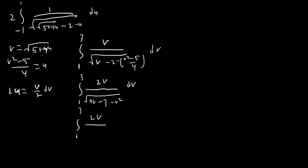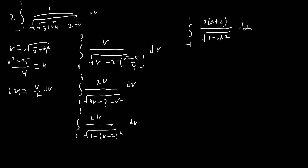Letting α = v − 2, the integral becomes the integral from −1 to 1 of (2α + 2) / √(1 − α²) dα. The term with 2α vanishes because it is an odd function integrated over a symmetric interval, while 1/√(1 − α²) is even. We're left with 4 times arcsin(α) evaluated from −1 to 1, which equals 4π.